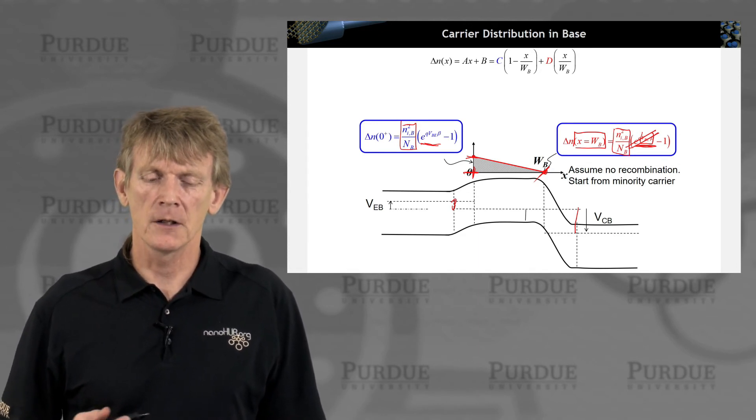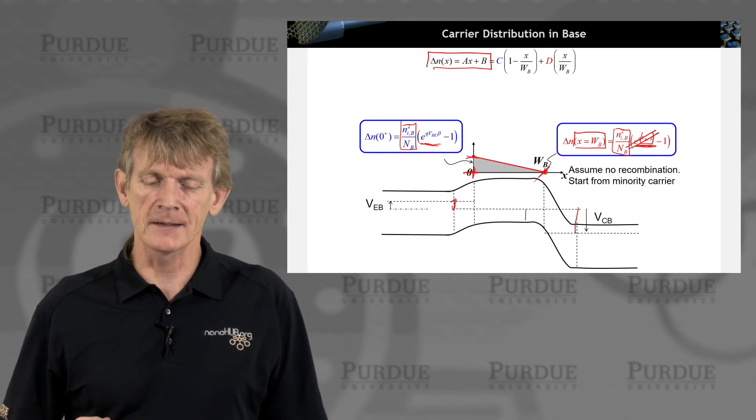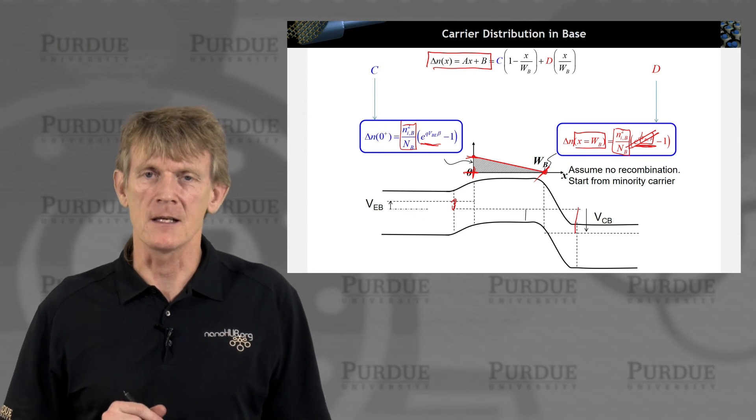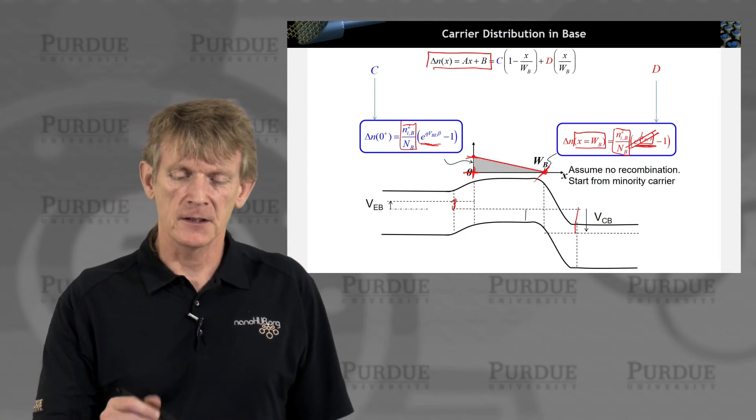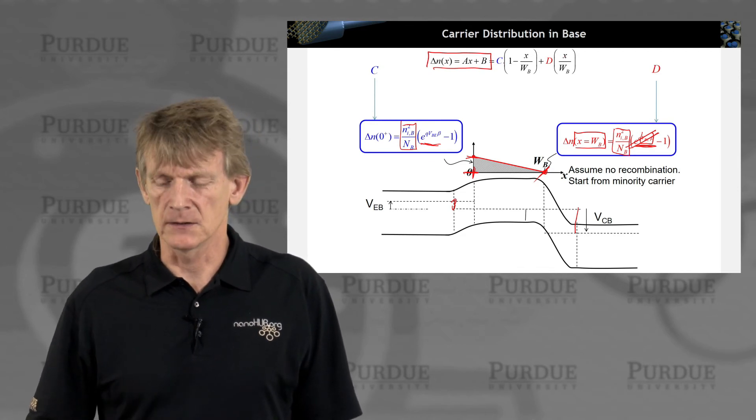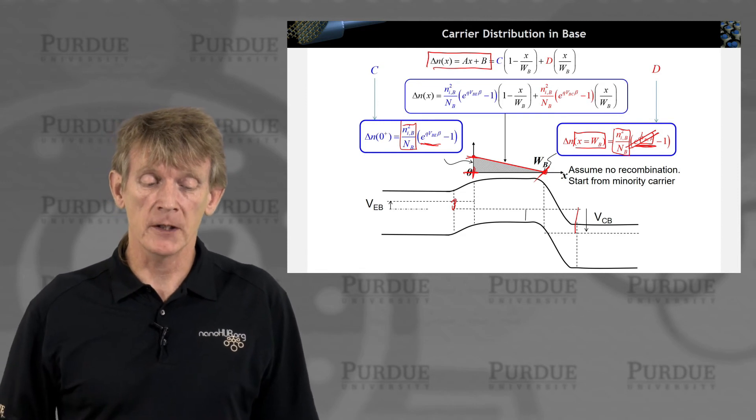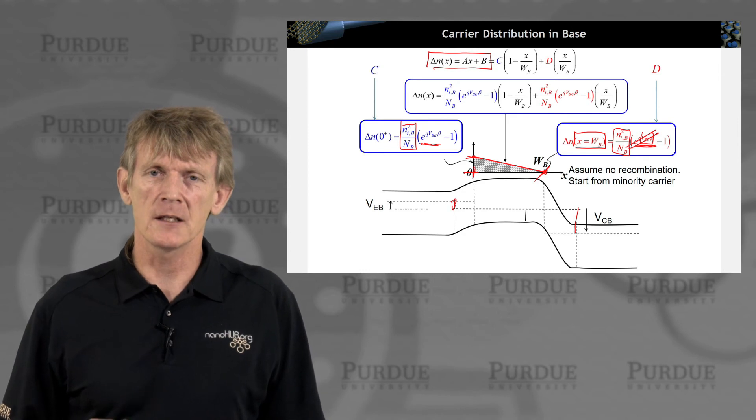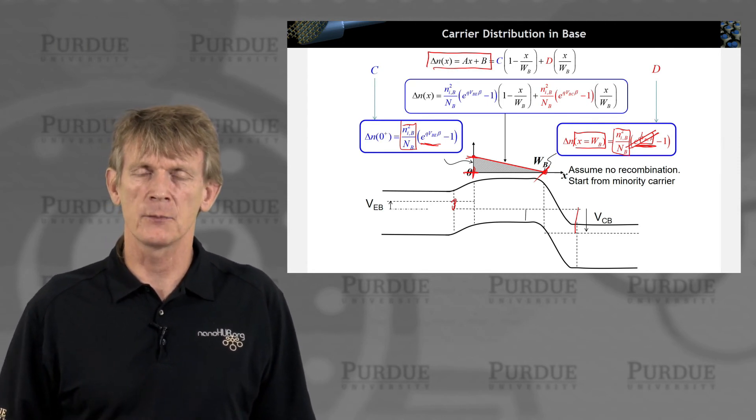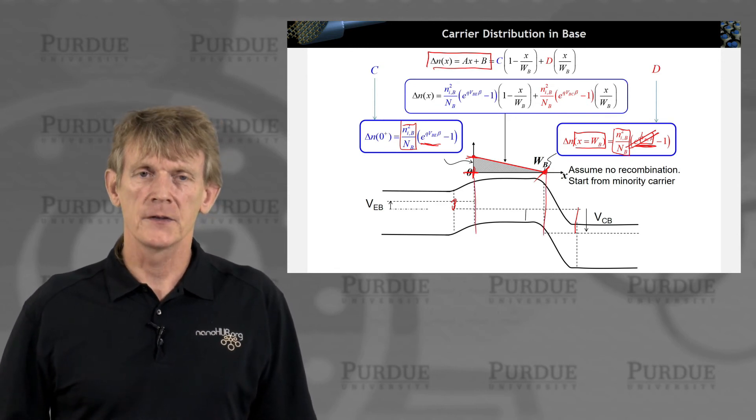If we assume no recombination, we know it goes down linearly. We can set up an expression for the carrier distribution, just like what we had done before. We've solved this kind of differential equation before. We know the linear ansatz is that it's a linear expression, because there is no recombination generation. If we choose our coordinate system wisely, we can identify this. This must be C and this must be D. If you plug in x equals zero, you get the C. If you plug in x equals WB, that's a one.